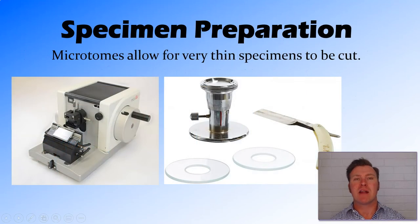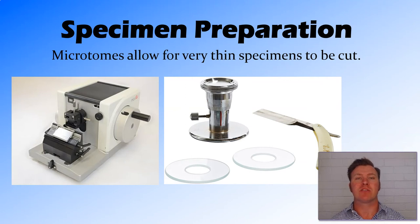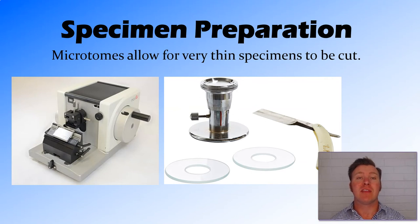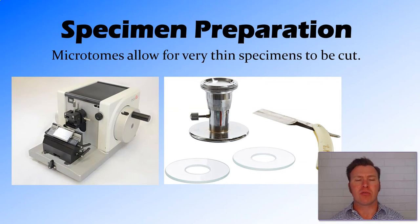We're also much better at preparing our specimens now. When using a compound microscope, we're usually shining a light source through the specimen, so the thicker the specimen, the more layers of cells that light needs to shine through. We now have machines that are really good at giving us very, very thin sections that we can look through.